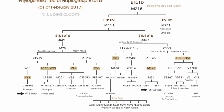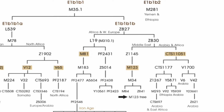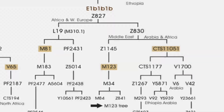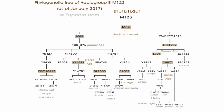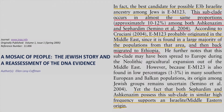Starting with number three: E-Z830 is the third best candidate for Abraham and the Israelites. The Israelites would represent some subclade within E-Z830. The reason I say this is because many Jews and Arabs are under E-Z830, and E-Z830 is considered one of the major founding lineages of the Jewish population. According to the paper titled 'A Mosaic of People: The Jewish Story and a Reassessment of the DNA Evidence,' the best candidate for possibly E3B Israelite ancestry among the Jews is E-M123, occurring in approximately 10–12 percent among both Ashkenazim and Sephardim, and probably originated in the Middle East.